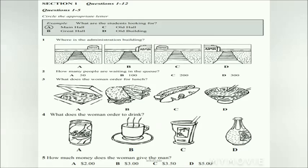You will see that there is an example which has been done for you. On this occasion only, the conversation relating to the example will be played first. 'Excuse me, can you help me? I was looking for the main hall.' 'No, maybe I can actually. I'm looking for the main hall too. I think it's in the administration building. Are you a new student?' 'Yeah, I am.' The man says he's looking for the main hall too, so A has been circled.